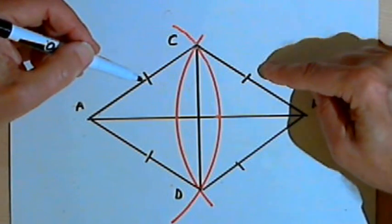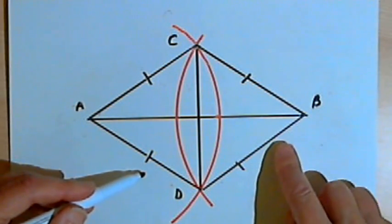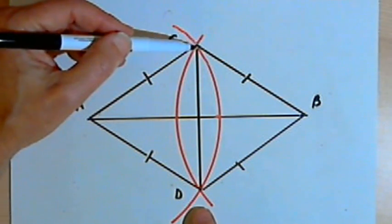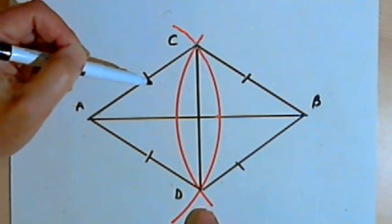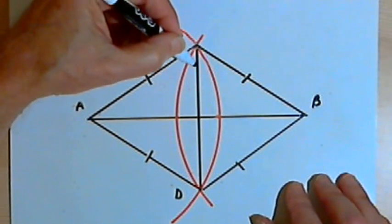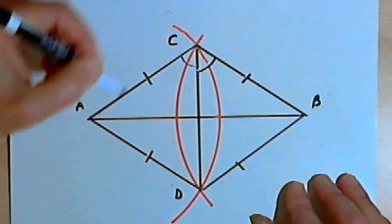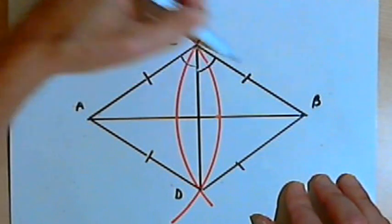AC is congruent with BC, AD is congruent with BD, and both triangles share line CD. So those two triangles are congruent. That means the angles formed at the top of those triangles are also congruent. Angle ACD is congruent with angle BCD.